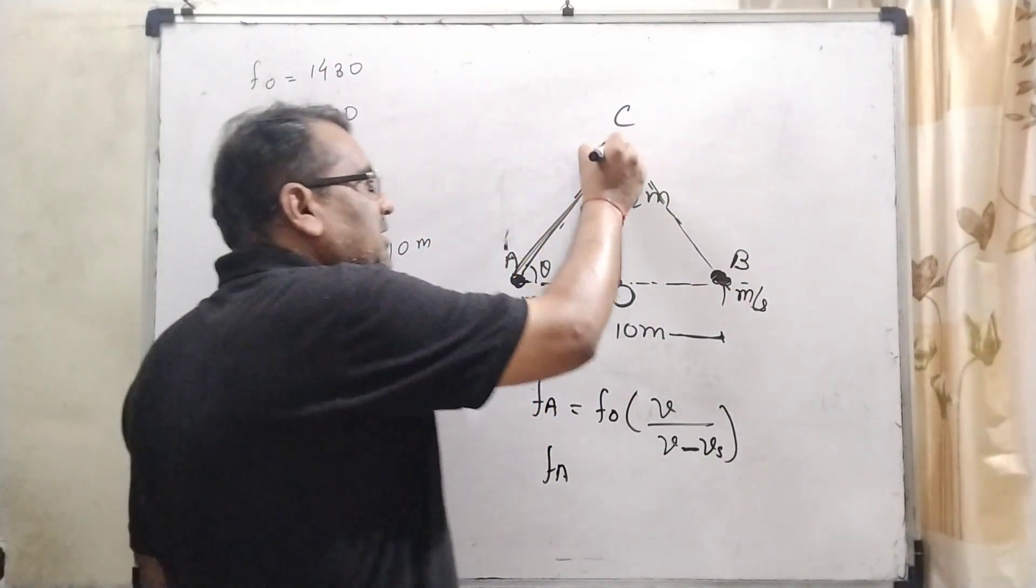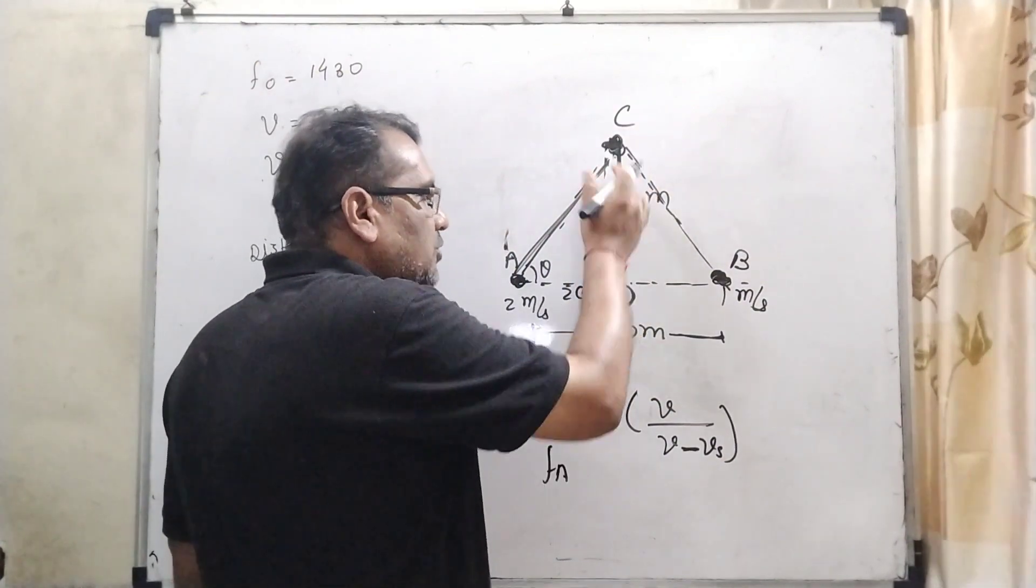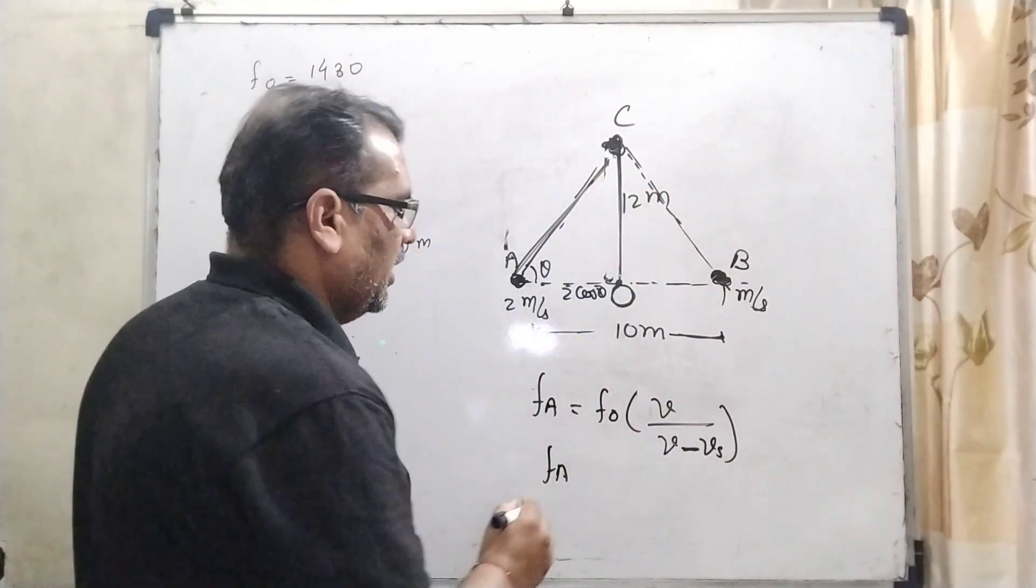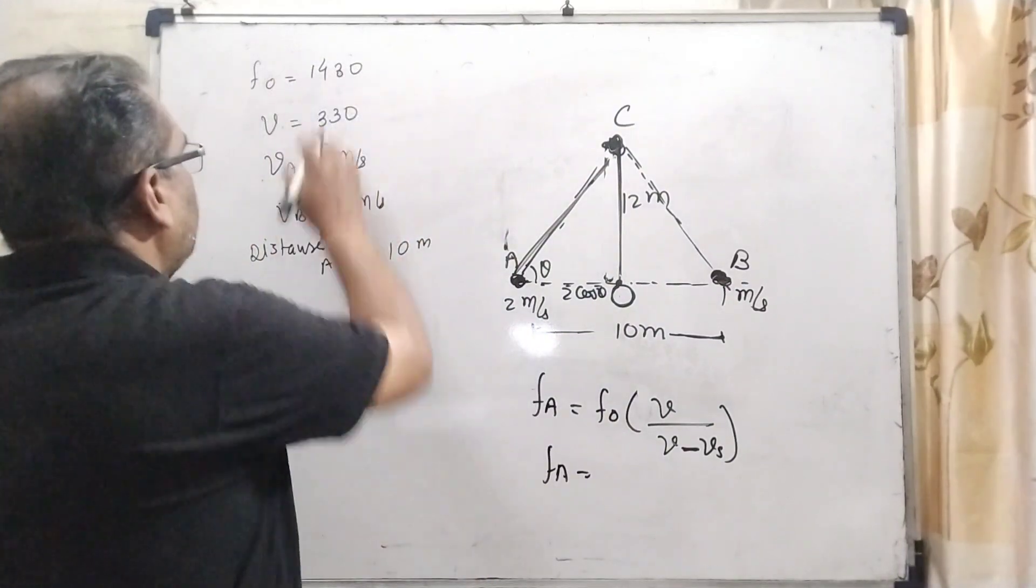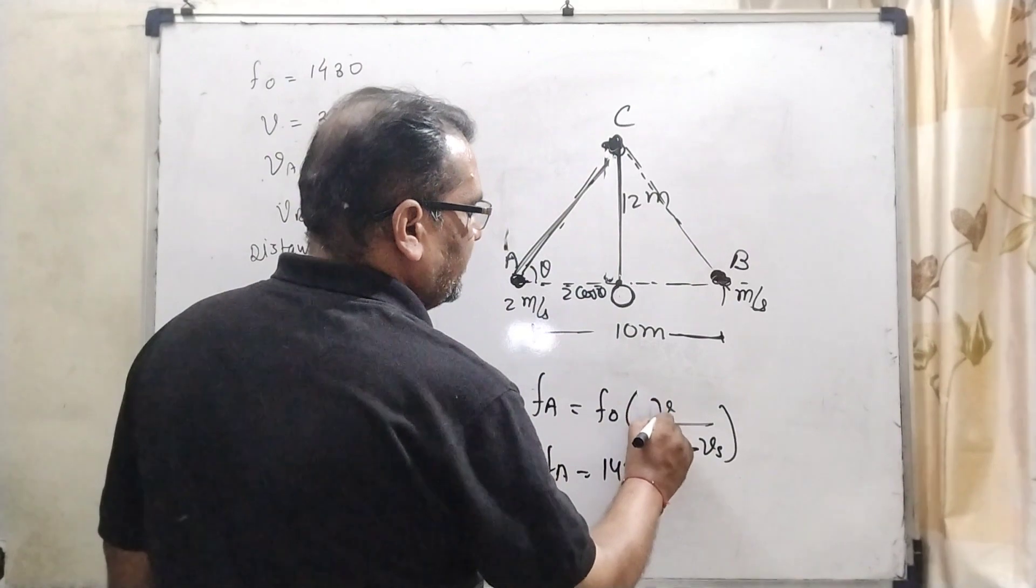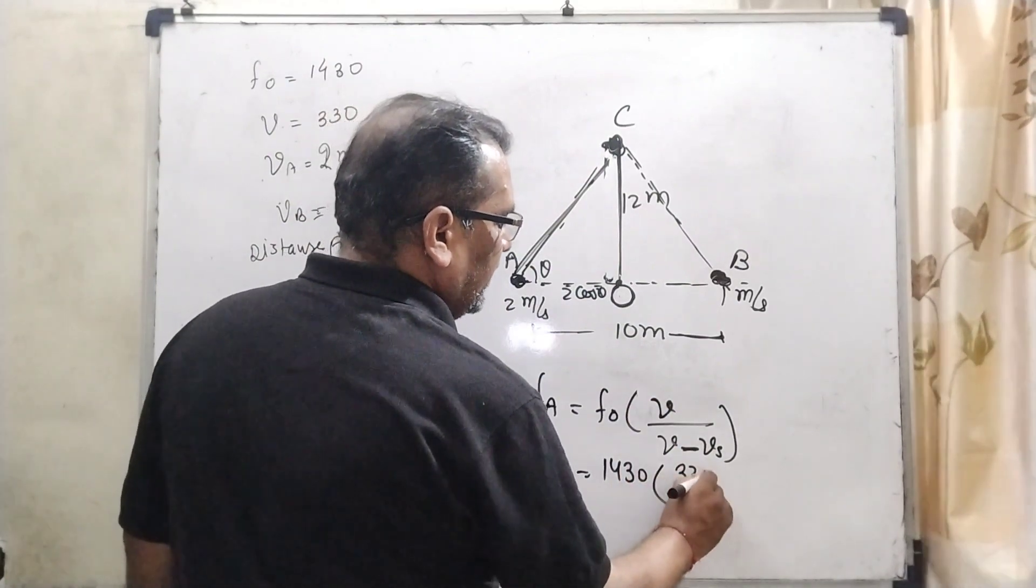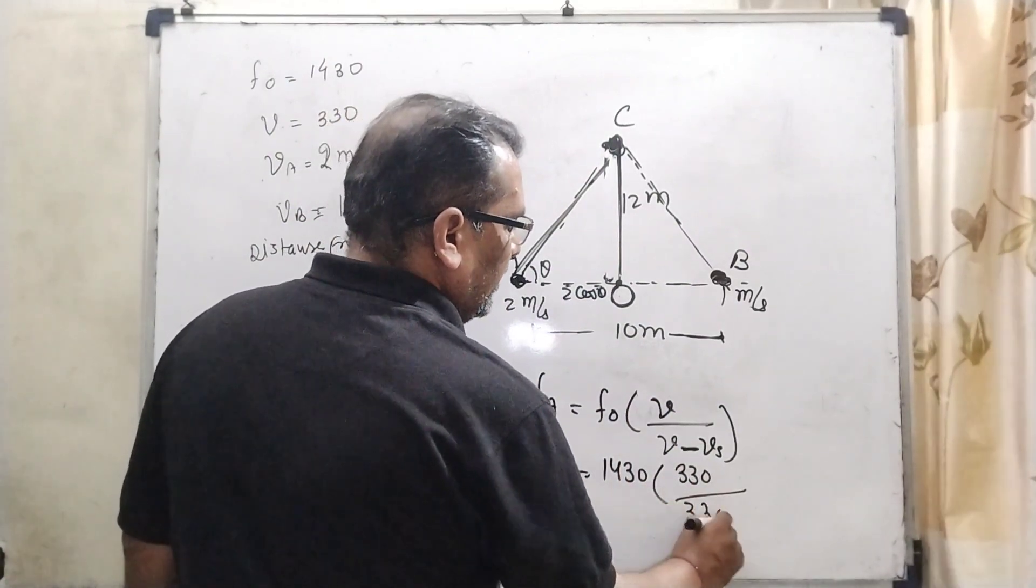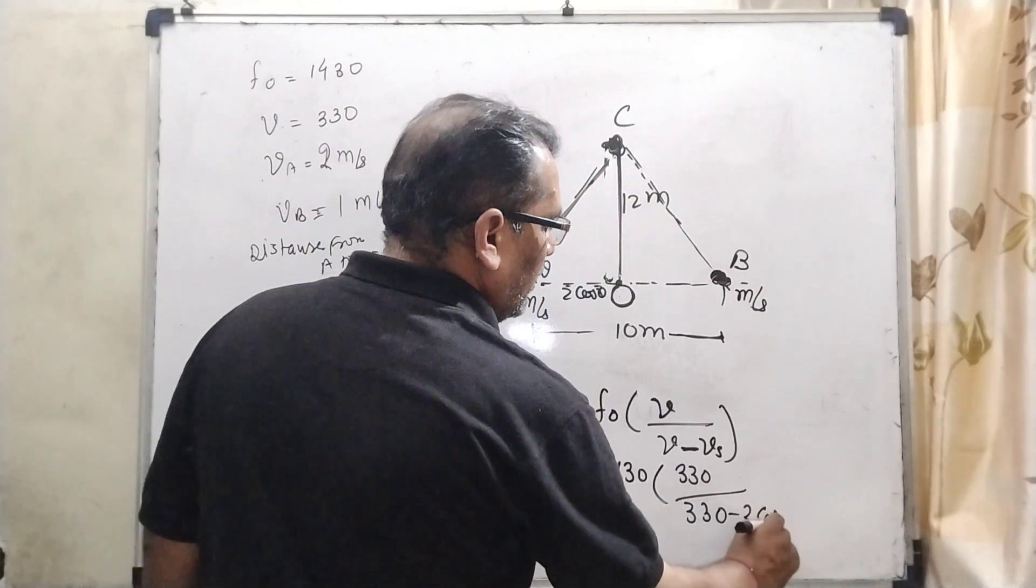The person is standing in between. Therefore, we can use 2 cos θ. The frequency f₀ is given as 1430, speed of sound in air is 330, so it's 330 minus 2 cos θ.